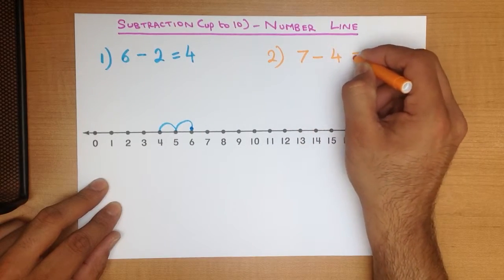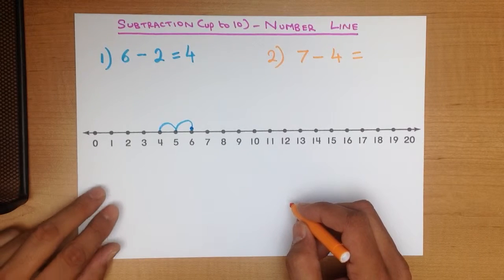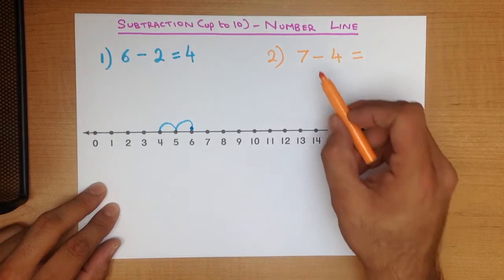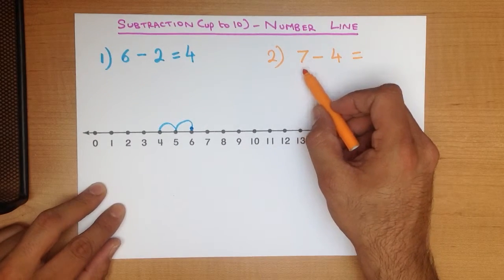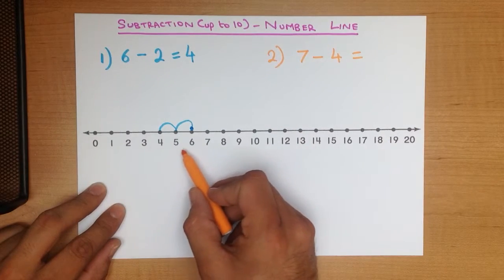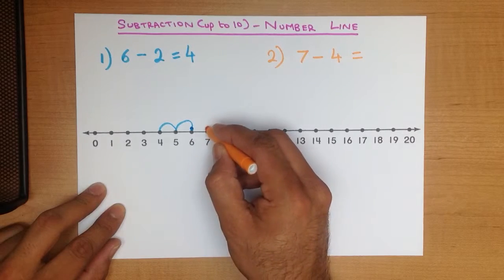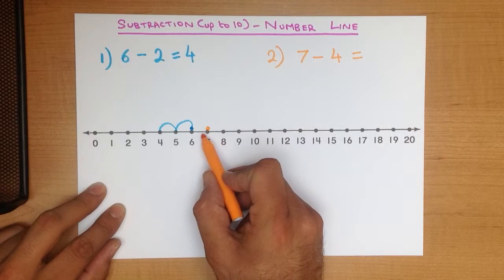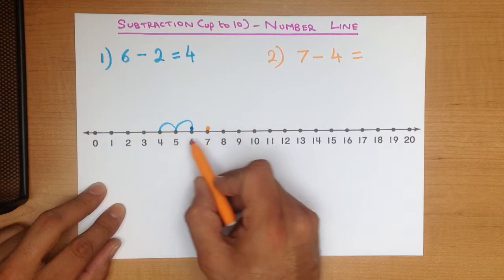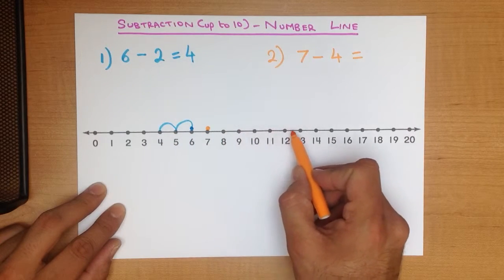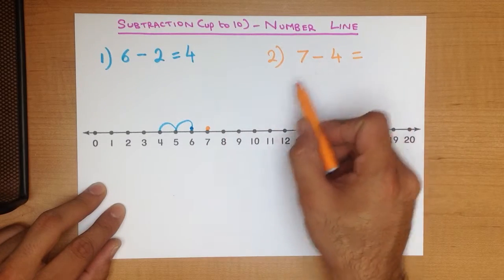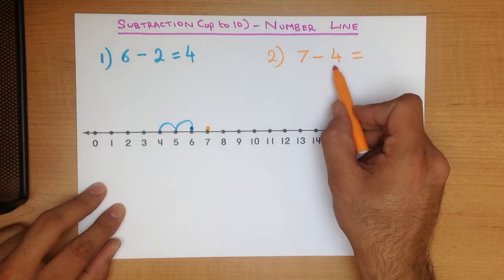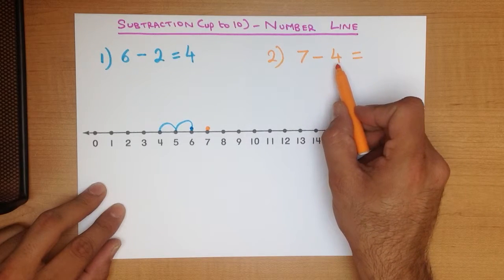7 minus 4. The same principle applies. The first number is 7 — let's find 7 on our number line, here it is. Now we are minusing, so what do we do? We go backwards. We don't go forwards — if it was plus we'd go forwards, but it's minus so we go backwards. How many jumps are we going to go back?